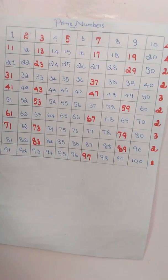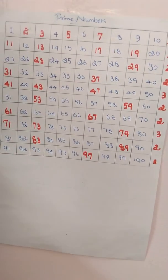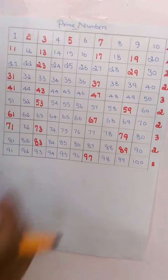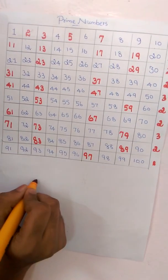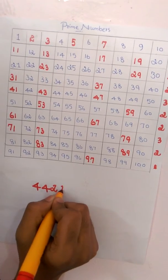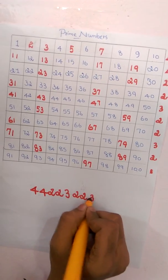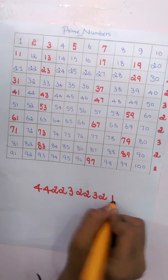Double 4, double 2, 3, double 2, 3, 2, 1. Without this chart, we can find the prime numbers. Then write the prime number: double 4, double 2, 3, double 2, 3, 2, 1.